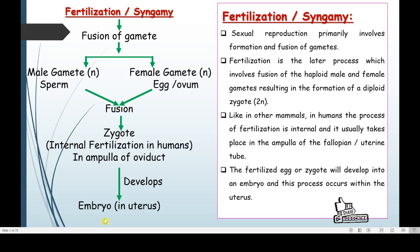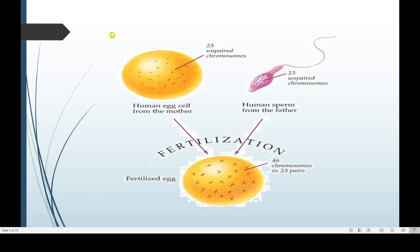The site of fertilization is the ampulla. We have seen the structure of the fallopian tube or oviduct, including the ampulla region. Fertilization takes place at the ampulla, and then further development of the zygote into the embryo and thus a child takes place inside the uterus. The egg or ovum has 23 chromosomes and the sperm also has 23 chromosomes.